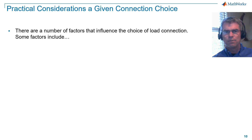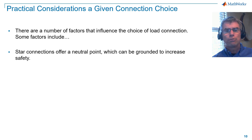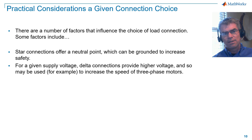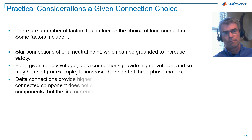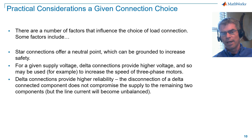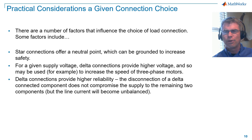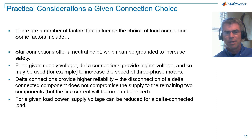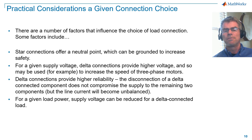There are a number of factors that influence the choice of load connection. Star connections offer a neutral point, which can be grounded to increase safety. For a given supply voltage, delta connections provide higher voltage and so may be used, for example, to increase the speed of three-phase motors. Delta connections provide higher reliability in some respects — the disconnection of a delta connected component does not compromise the supply to the remaining two components, but the line current will become unbalanced. For a given load power, supply voltage can be reduced for a delta connected load. Some of these considerations will be explored further in future videos.